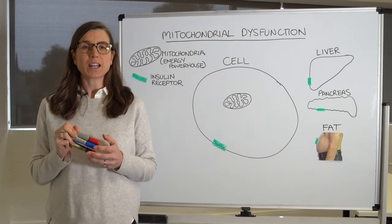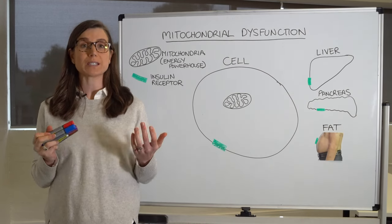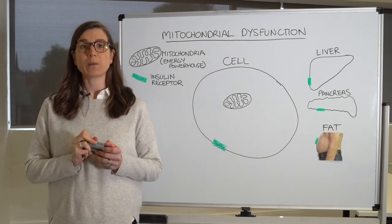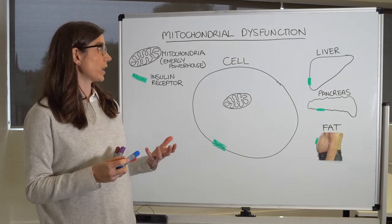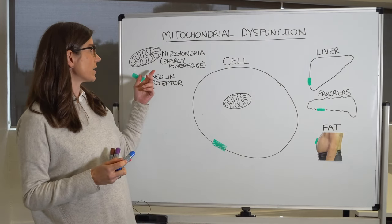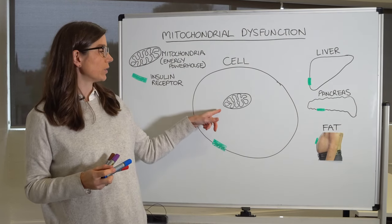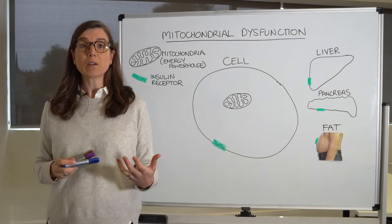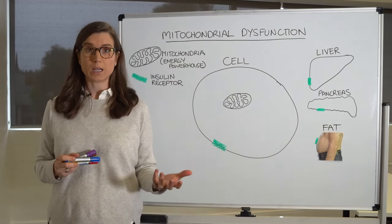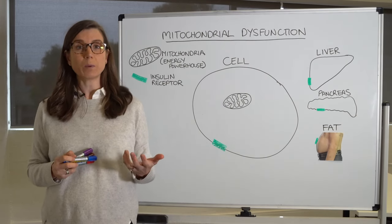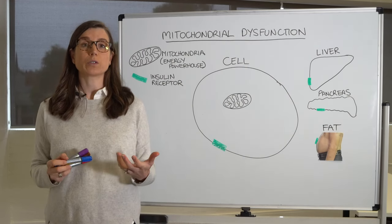Today I'm talking about mitochondria, or mitochondrial dysfunction. The mitochondria are basically the energy powerhouse of the cell — little organelles that live in all the cells in your body, and they are responsible for turning glucose and fat into energy. We know that people with type 2 diabetes and insulin resistance have a level of mitochondrial dysfunction.